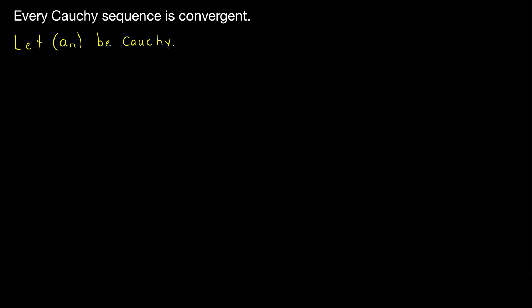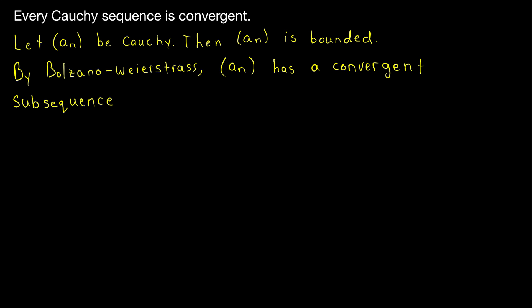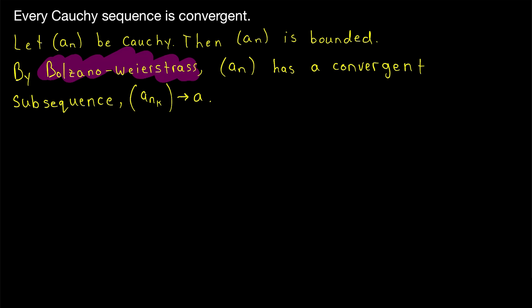So what could the limit be? What do we know about the sequence AN? Here's an important piece of information: we previously proved that Cauchy sequences are bounded. So since AN is Cauchy, we can conclude it's bounded. Then, since AN is a bounded sequence, by the Bolzano-Weierstrass theorem it must have a convergent subsequence, which we'll call ANK, and say that this converges to a limit of A. That's by the Bolzano-Weierstrass theorem, which tells us every bounded sequence has a convergent subsequence. So now we have a limit A to work with.